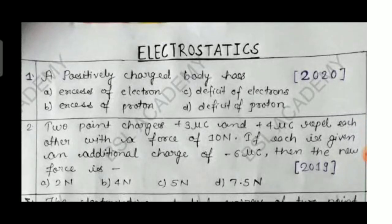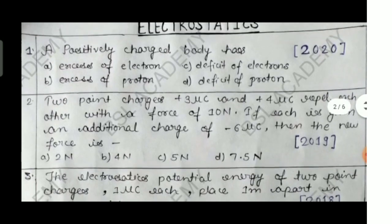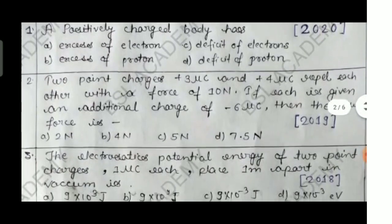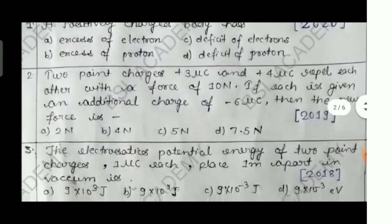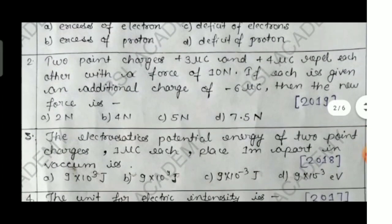The very first question, number one: a positively charged body has — option A: excess of electrons, option B: excess of protons, option C: deficit of electrons, option D: deficit of protons. This question was asked in 2020 of the Jharkhand Board. Please answer it.